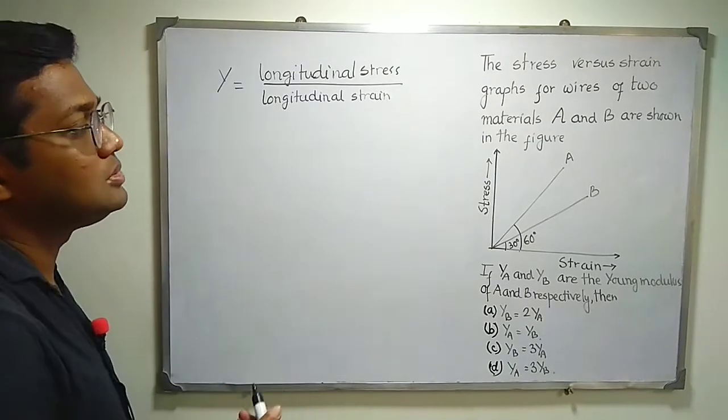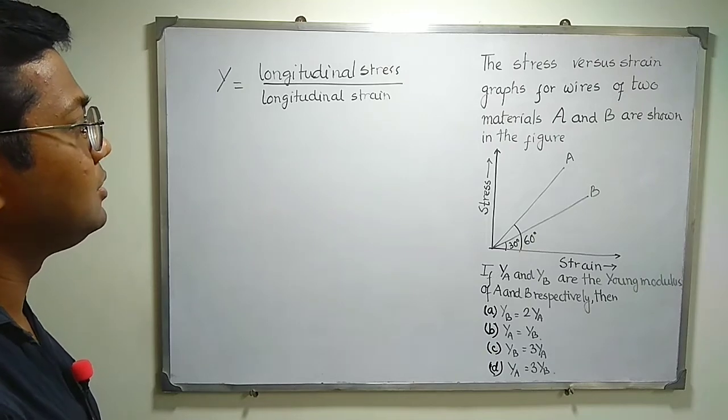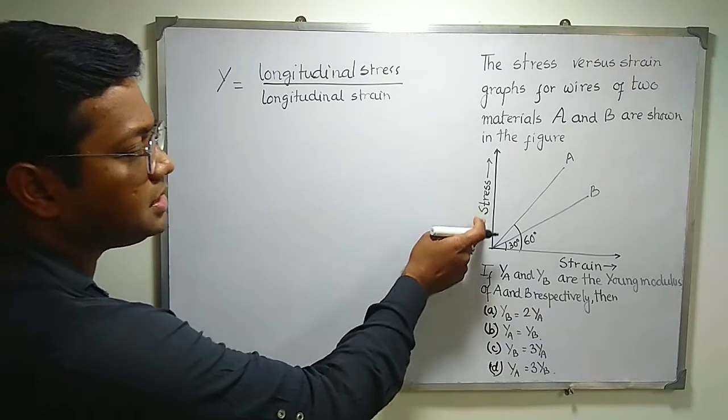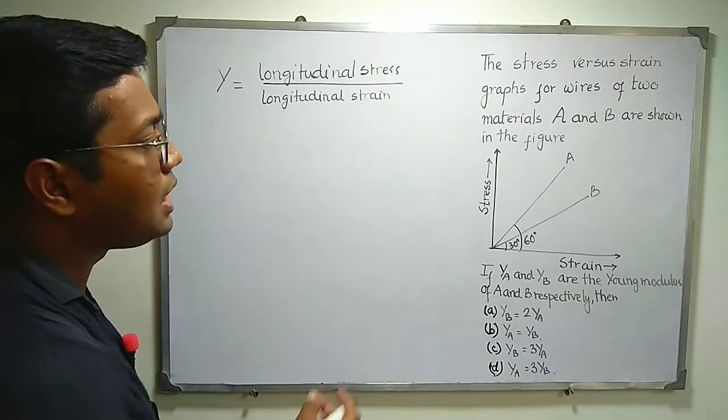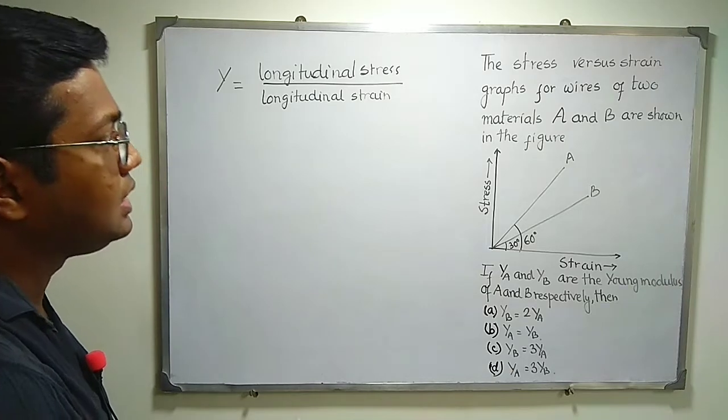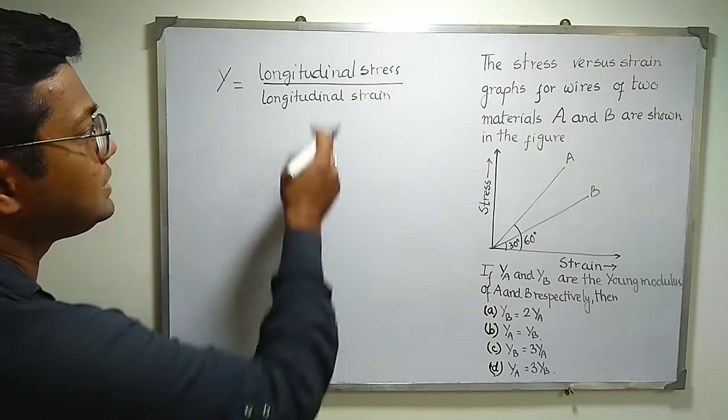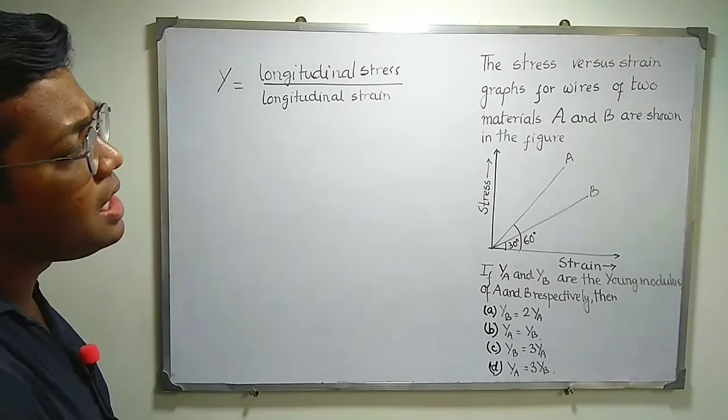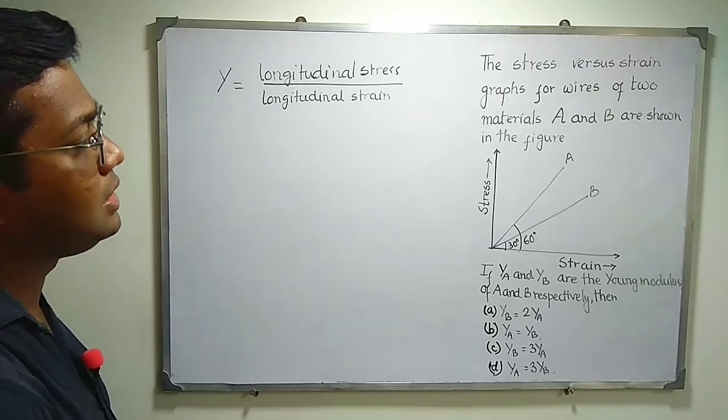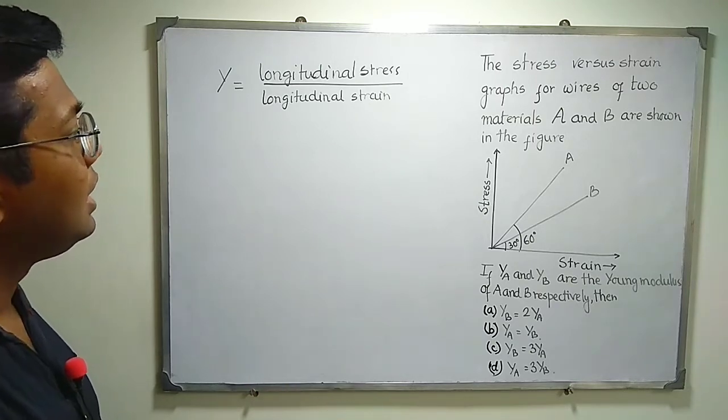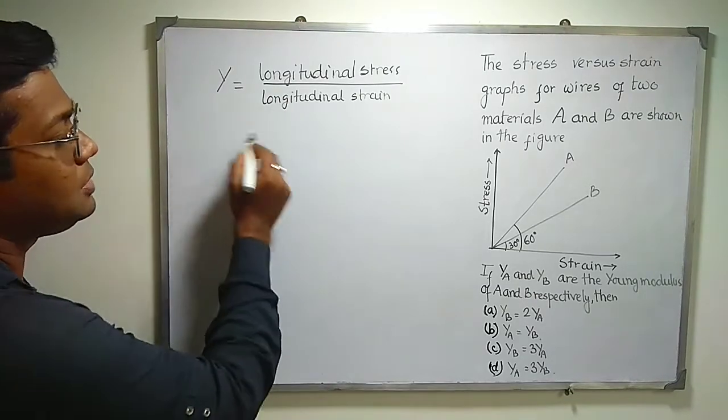All of us know the Young modulus like this. Young modulus is longitudinal stress divided by longitudinal strain. The stress is plotted along the y-axis and strain along the x-axis. So it is simply the stress by strain ratio in case of deforming force applied perpendicular to the surface and extended longitudinally. It is a property of the material.